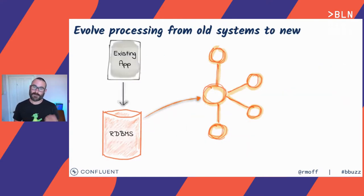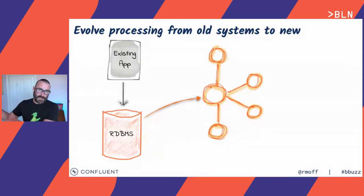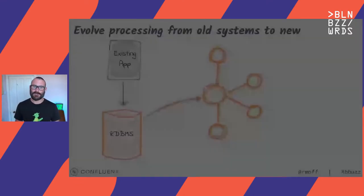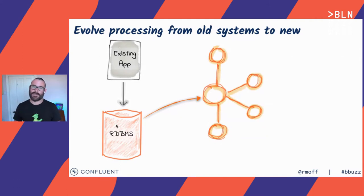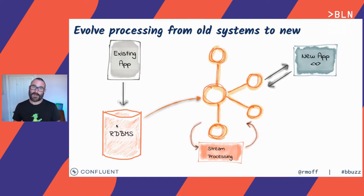Another use case is to evolve existing systems towards a new way of building them. Many systems today are built as monoliths — nothing wrong with monoliths — but sometimes people decide that's not the way they want to continue. Instead of ditching everything and starting fresh, we can capture events out of the monolith's database into Kafka. As things happen in the database, record at a time, those are events we can capture into Kafka and use to drive new services and applications, gradually chipping away at and replacing functionality driven by the same events from the same database.